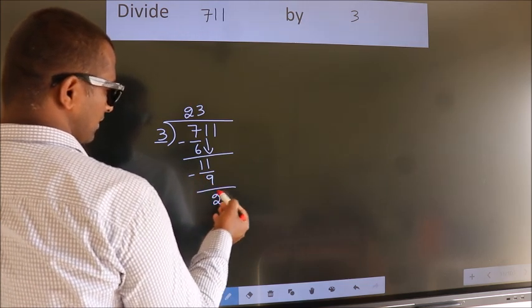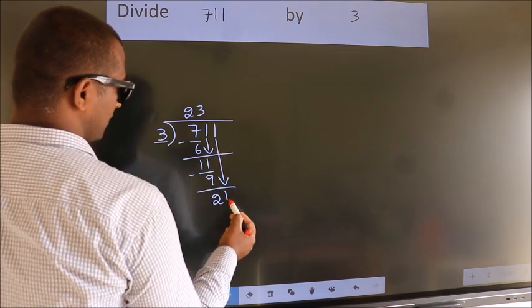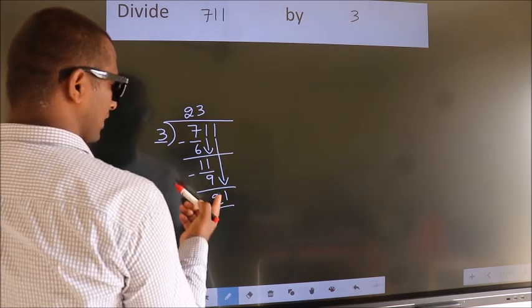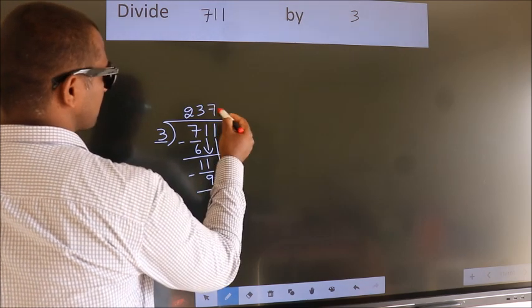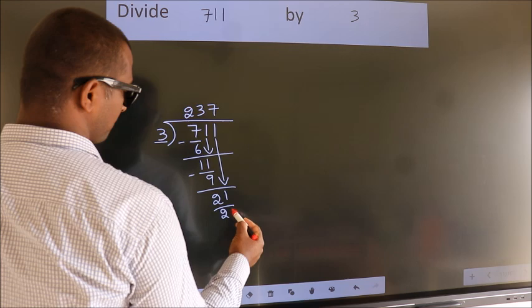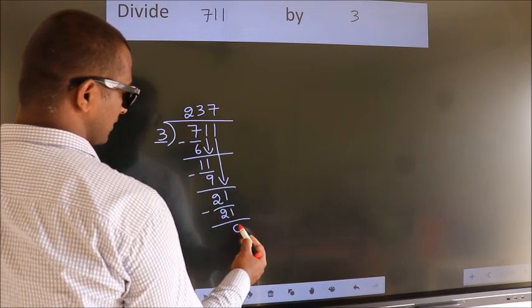After this, bring down the next number, 1. So we have 21. When do we get 21 in the 3 table? 3 times 7 equals 21. We subtract and get 0.